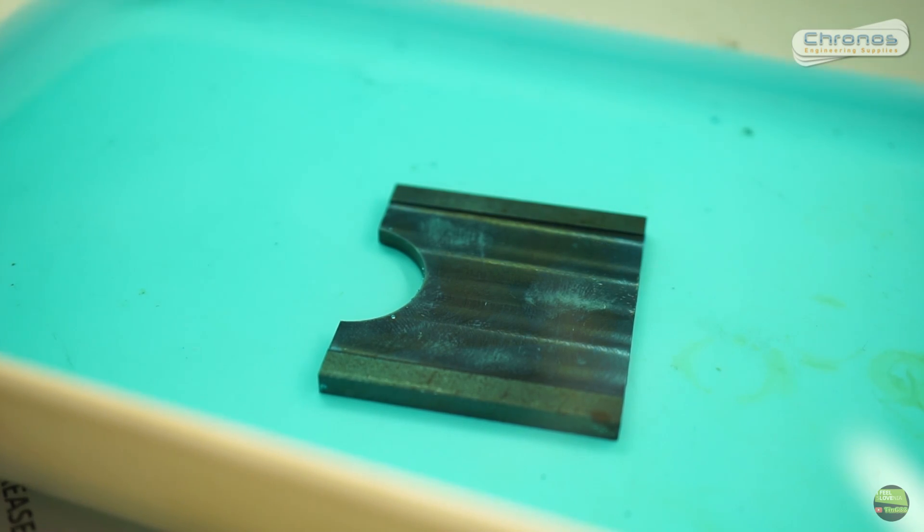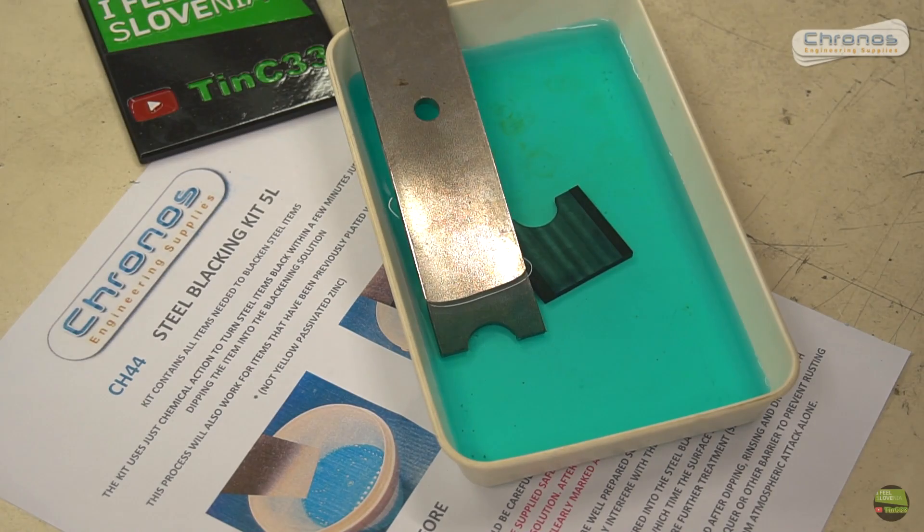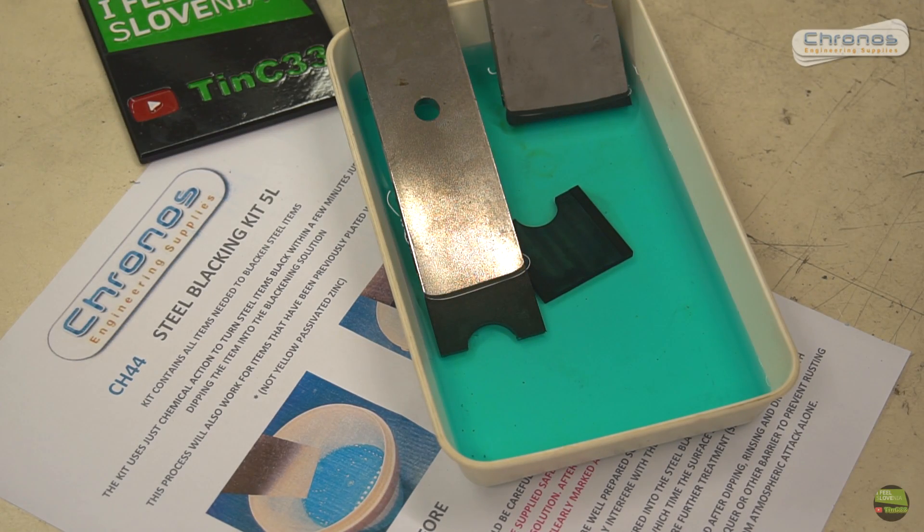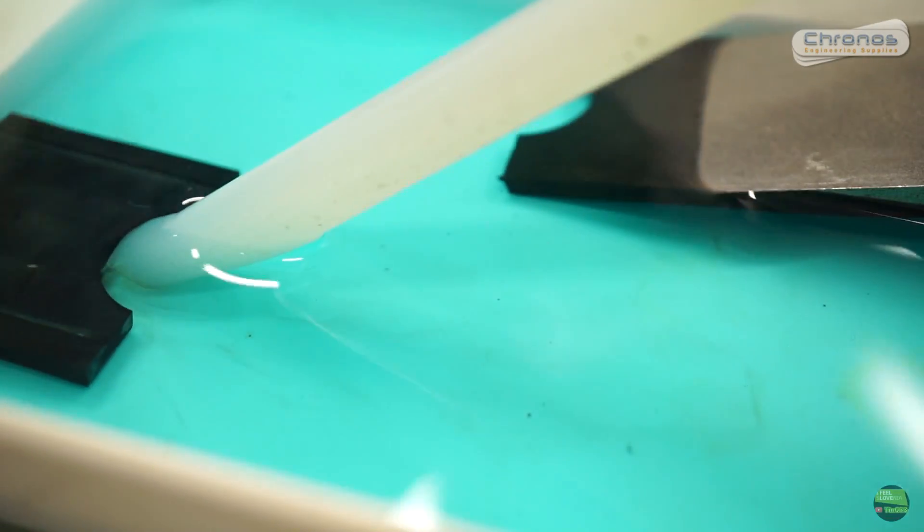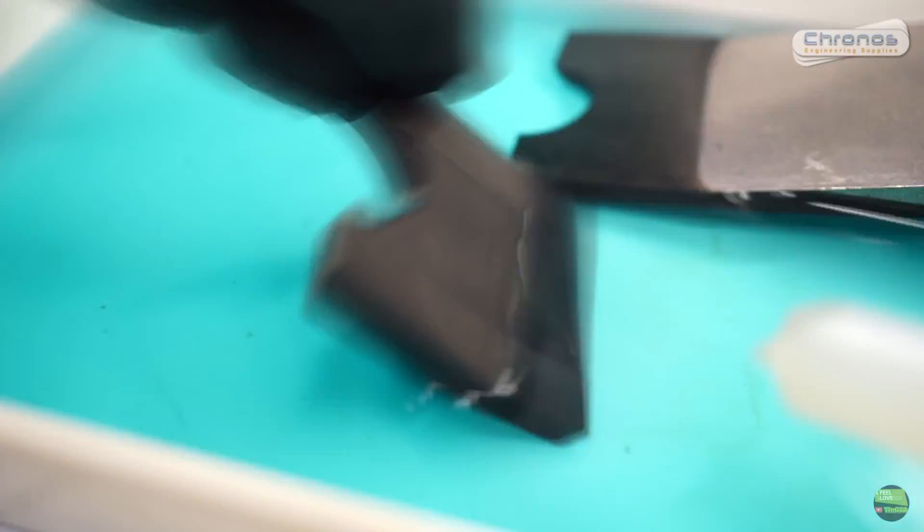When we drop the part in solution we can see that it starts changing color in seconds. After 5 to 10 seconds it's almost black. But every fingerprint and other fails are visible. But after a minute or two it becomes completely black, doesn't matter if there are any fingerprints, grease or rust. After about 5 minutes I turn the parts around so they are evenly blacked all around.